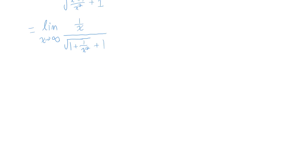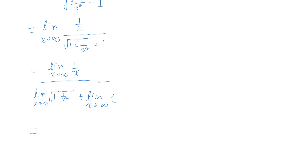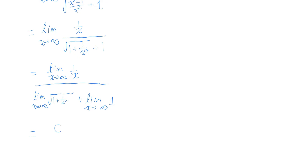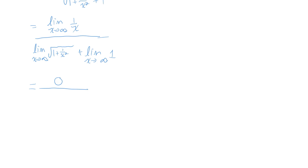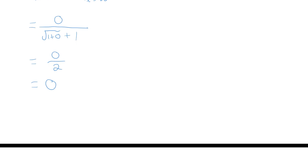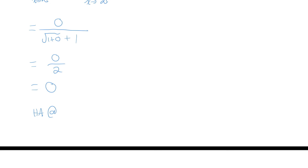Now finding the limit of each term as x goes to infinity: in the numerator, 1 over x squared goes to 0. This gives 0 over the square root of 1 plus 0, plus 1 — so 0 over the square root of 1, which is 1, plus 1 equals 0 over 2, which is 0. So as x goes to infinity, y approaches 0, meaning there is a horizontal asymptote at y equals 0.